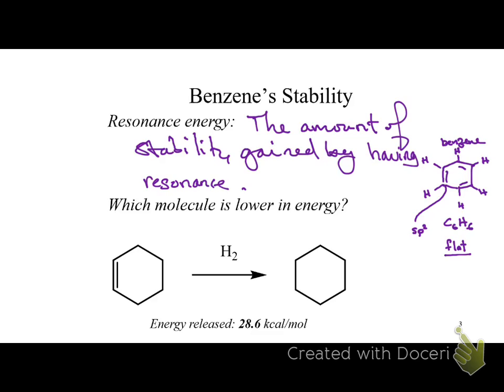To establish the resonance energy for benzene, since it has three double bonds, we first ask: how much energy do you get from a double bond without resonance? We take a similar structure like cyclohexene and hydrogenate it. When you hydrogenate it, it releases energy. Organic chemistry uses kcal rather than kilojoules — they're proportional — and the energy released is 28.6 kcal per mole. That's the heat of hydrogenation.